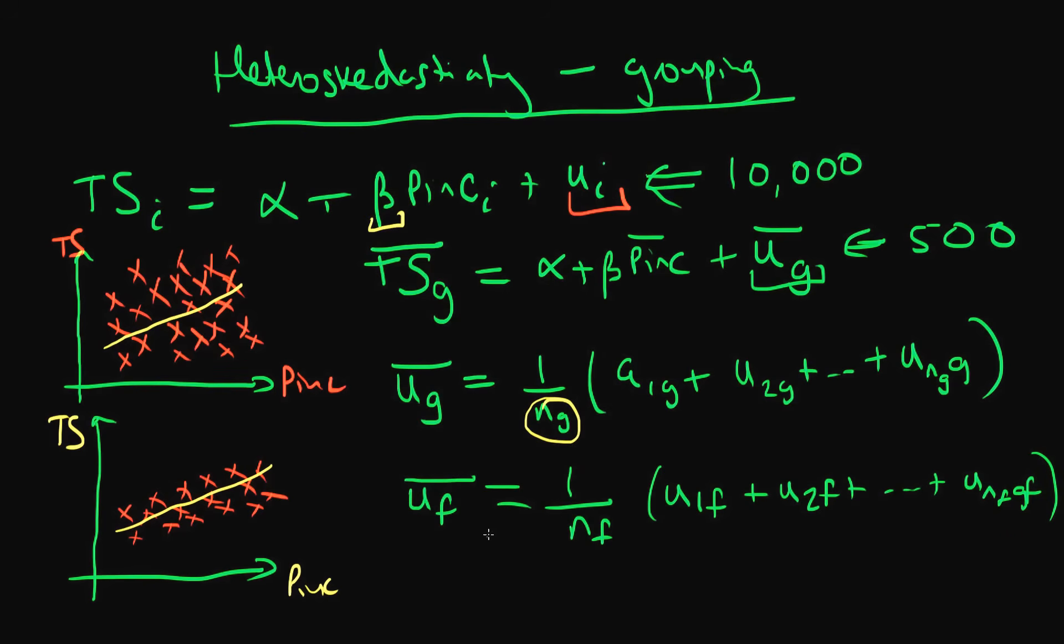And so what we can see here is that the level of the error, or this average error, depends on the size of the grouping. So in the case of group G, it was 1 over the number of individuals in group G. For the average error of individuals in group F, it was 1 over N_F times the sum of the individual errors.